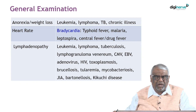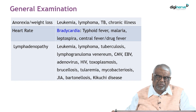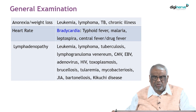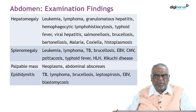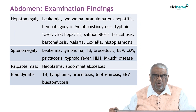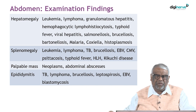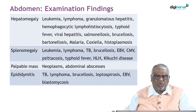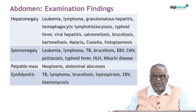Relative bradycardia is a feature of typhoid fever; otherwise, tachycardia is more typical. Lymphadenopathy may suggest malignancy, viral infection — typically Epstein-Barr virus, adenovirus, HIV — or parasitic or collagen vascular diseases. Kikuchi disease is another cause. Hepatomegaly and splenomegaly suggest reticuloendothelial system involvement. The causes of hepatomegaly, splenomegaly, and lymphadenopathy overlap: infections, malignancies, and collagen vascular diseases all affect the reticuloendothelial system.